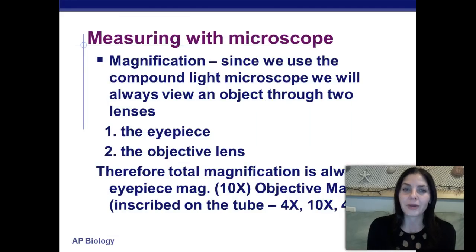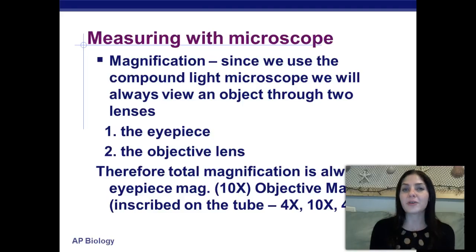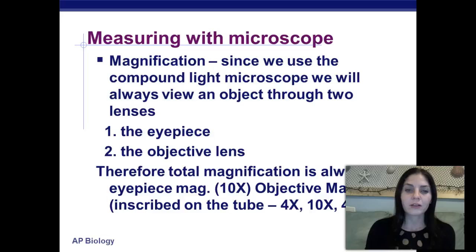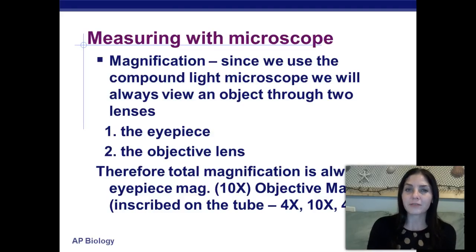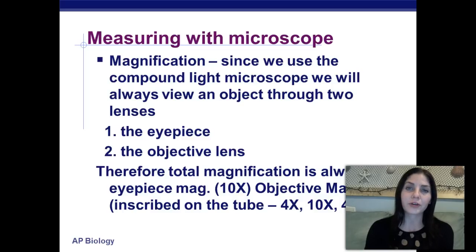So how do we measure with a microscope? With magnification, since we use the compound light microscope, we will always view an object through two lenses — we have the eyepiece and we also have the objective lens, the ones that rotate around and click into place. Therefore, the total magnification is always going to be equal to the eye magnification, which most times is 10x, times the objective magnification. In our classroom we have a 4x, a 10x, and a 40x, so the maximum magnification we could view a specimen would be 400 times.